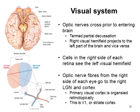Moving on to the visual system: the eyes lie directly underneath the frontal lobes. The optic nerves come down and form an optic chiasm where they actually cross over. This is called partial decussation. As a result, the right visual hemifield projects to the left part of the brain and vice versa, which is why if you cover one eye and then the other, you'll see different parts of your visual field. Cells in the right side of each retina see the left visual hemifield, and vice versa.